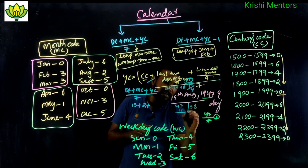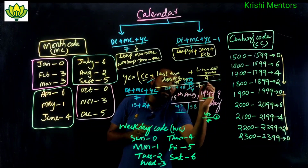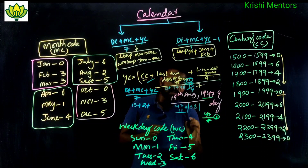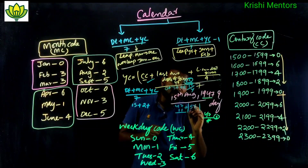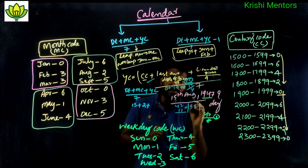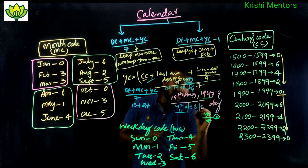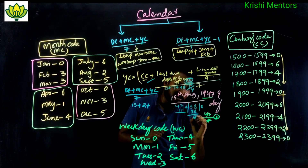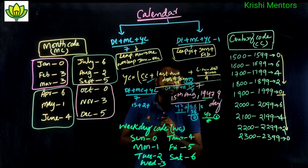Calculating: 47 plus 11 (quotient of 47/4) equals 58. Then 58 divided by 7 gives remainder 2. So the year code is 2.